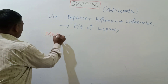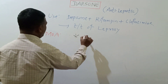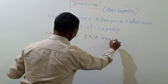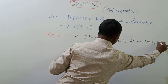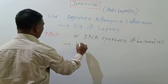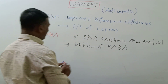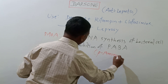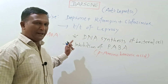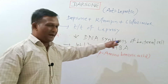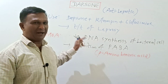Dapsone is thought to inhibit the DNA synthesis of the bacterial cell by inhibition of PABA, that is para-aminobenzoic acid. Thus by competitive inhibition of PABA, the bacterial DNA synthesis will be inhibited, and thus Dapsone has the antibacterial property.